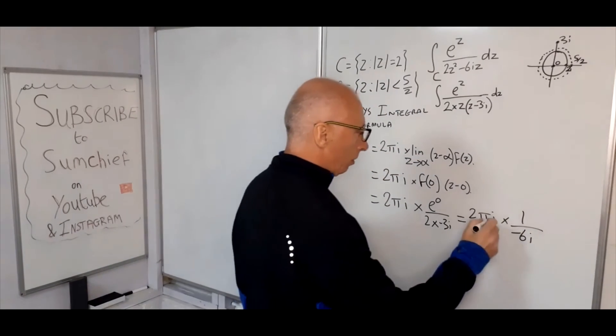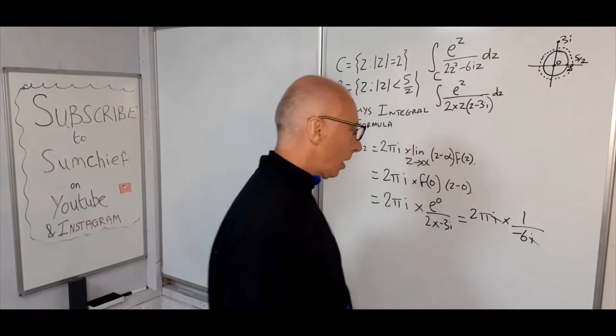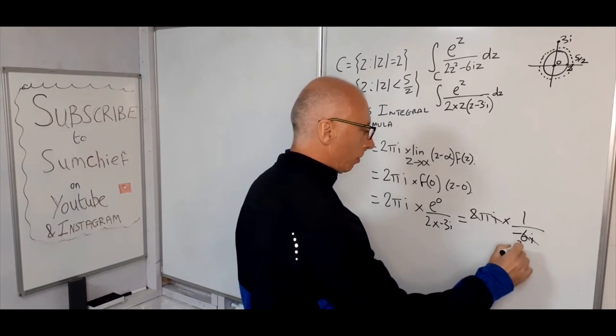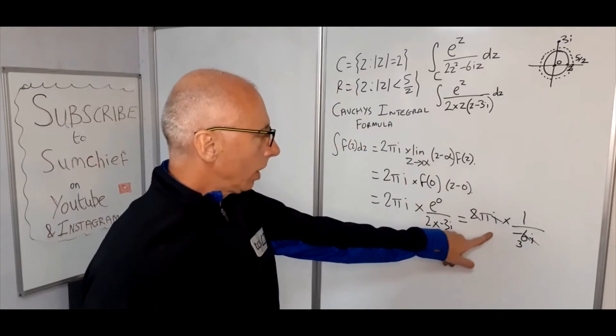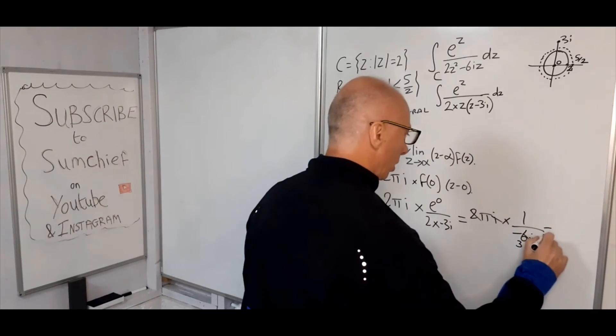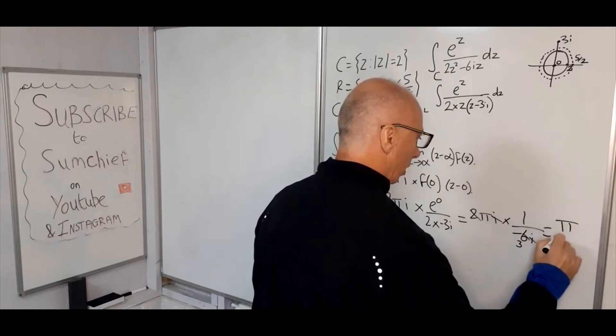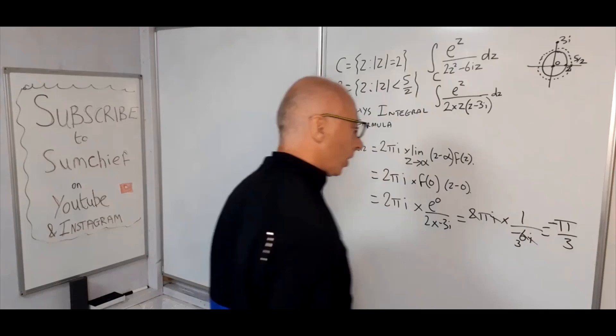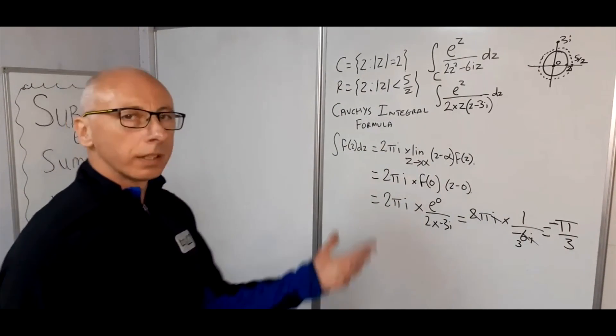Okay, so we've got some cancelling out which we can do here. That one can cancel, 2 can cancel with that to become minus 3. So basically left with π over 3i, or minus πi over 3. Okay, that's our solution.